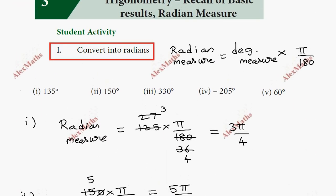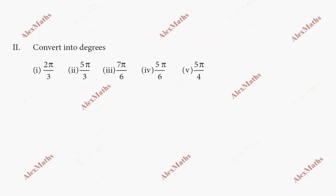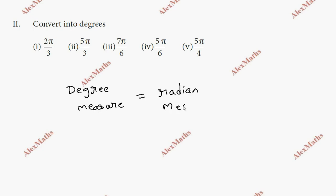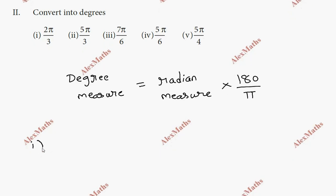Now for the second part: converting radians into degrees. The formula for degrees — degree measure equals the radian measure multiplied by 180/π. For the first subdivision, we have 2π/3.